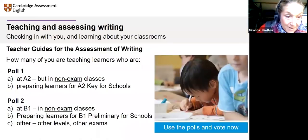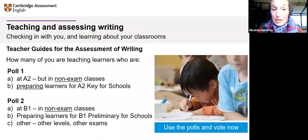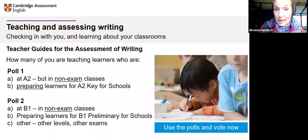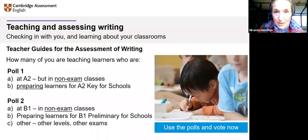I think it would be really helpful to check in with you and find out about your classrooms — how many of you are teaching learners at A2 level but in a non-exam class, or who are preparing learners for A2 Key for Schools. It'd be interesting to see how many are in exam classes. Quite an even mix — some of you are at the level but not preparing for A2 Key for Schools.